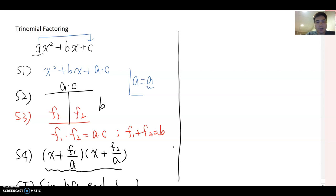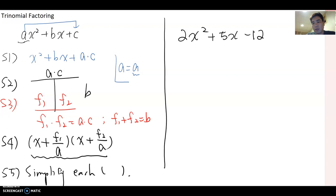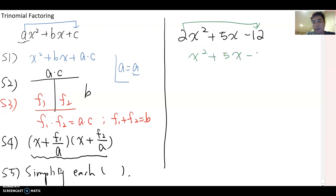Let's look at an example: 2x squared plus 5x minus 12. First, always check whether the trinomial has any common factor. There is no common factor here, so we can begin. Step one: move a to the c position and multiply. This gives x squared plus 5x minus 24, because 2 times 12 equals 24.